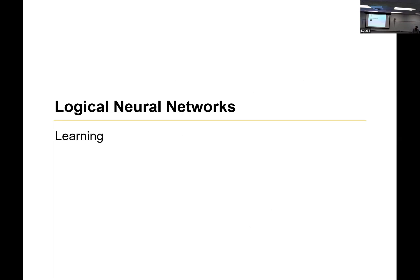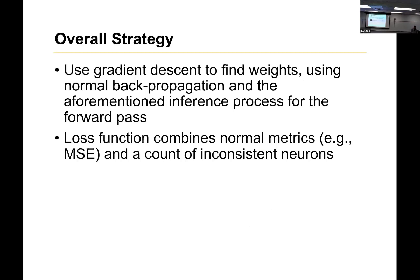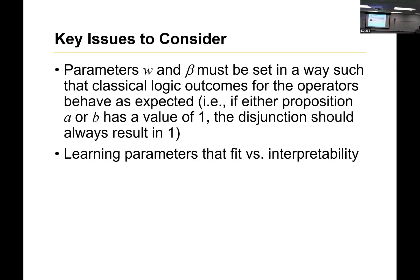That's a nice question to transition us into a discussion of learning. So gradient descent, and we already talked about loss function, something combining your normal error along with the count of the inconsistent neurons, which are equivalent to that.